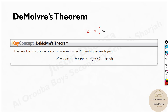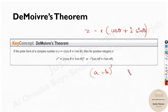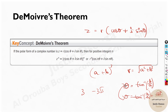The form is Z equals R times cos theta plus i sine theta, where cos theta is the real part and sine theta is the imaginary part. Now if you do not have this form and you have A plus Bi with some power, then you need to find R. R is given as the square root of A squared plus B squared. And to find theta, we use tan inverse of B by A.